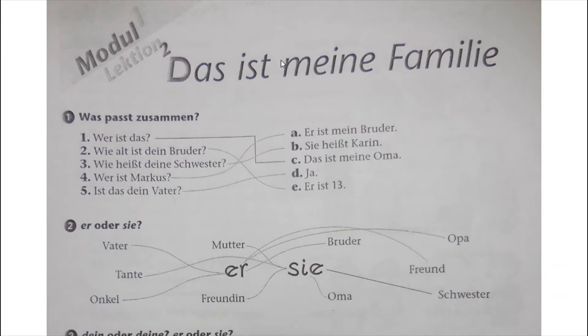We start with number 1. Was passt zusammen? 5 questions are given there and 5 options are given there. We have to find out the correct option for the correct question. Number 1 is: Wer ist das? The answer is: Das ist meine Oma.